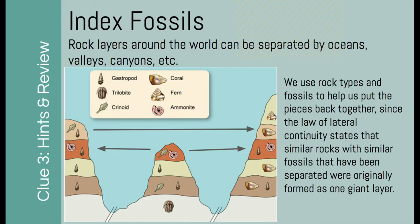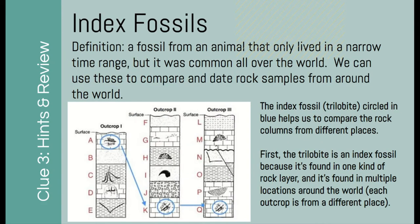So that's the basics for index fossils. The two things you want to look for are fossils found in only one layer, and fossils found across multiple locations. These are called outcrops — basically rock samples taken from different locations around the world.